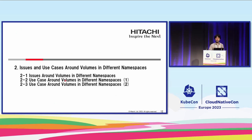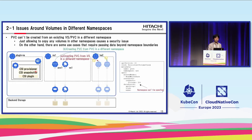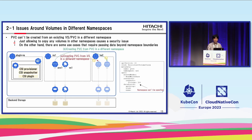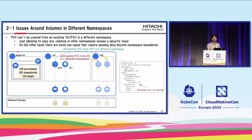Now that all the related features are explained, let's move on to the issues and use cases. As explained, a PVC can't be created from an existing VS or PVC in a different namespace — simply because namespaces can't be specified in the dataSource field. However, the reason behind this is that just allowing copying any volumes from other namespaces causes a security issue. Namespace should be a security boundary to prevent malicious users from accessing namespace resources. On the other hand, there are some use cases that require passing data beyond namespace boundaries.